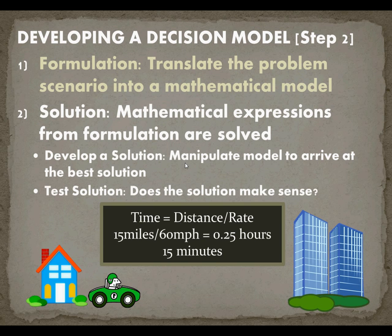Once we have an answer, we want to test the solution. Does this solution make sense? If it gave back that it was going to take 30 milliseconds to get to work, my previous experience would tell me that something's gone wrong in the modeling or computation. Whereas if I see 15 minutes and this aligns very closely to what I think the average drive would take for this distance, then I'm probably on the right path.